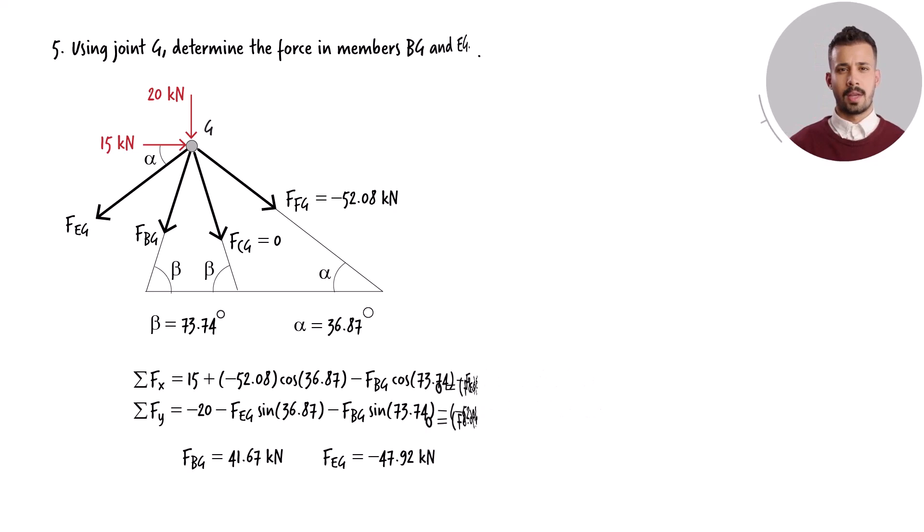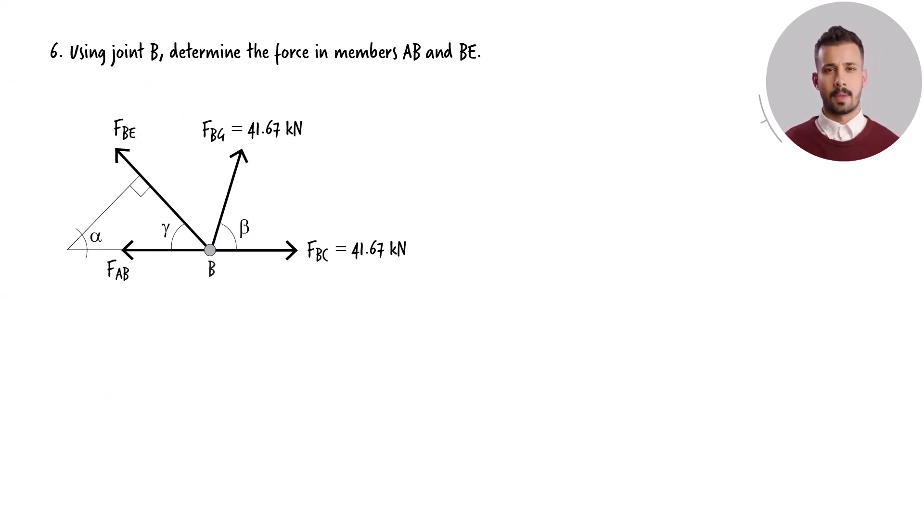Next, we move to joint B. We have determined angles alpha and beta already. Since this is a 90-degree angle, we can determine angle gamma by subtracting alpha from 90.